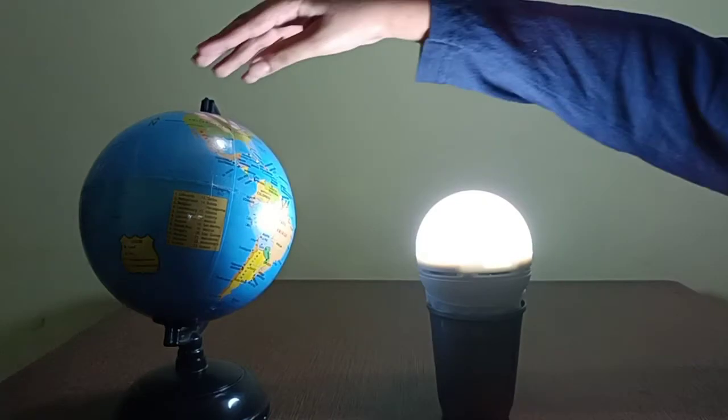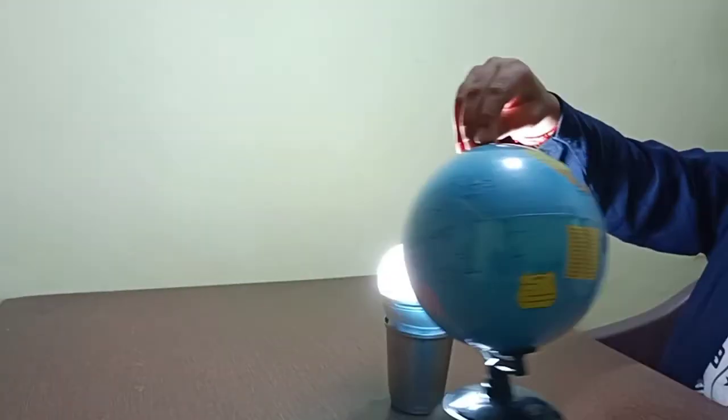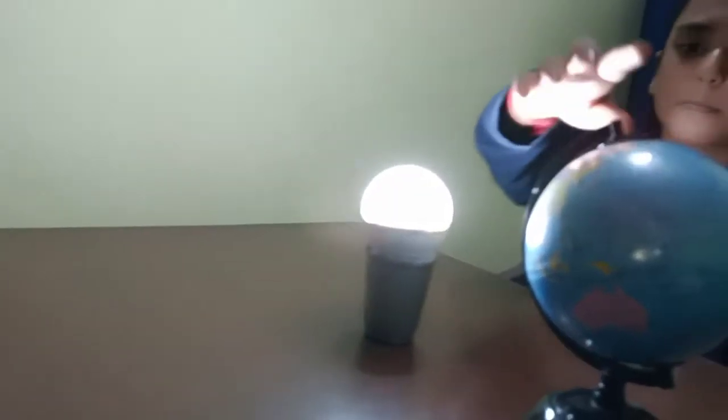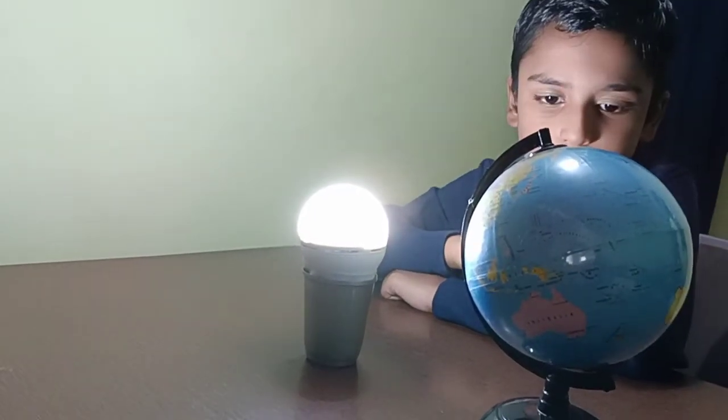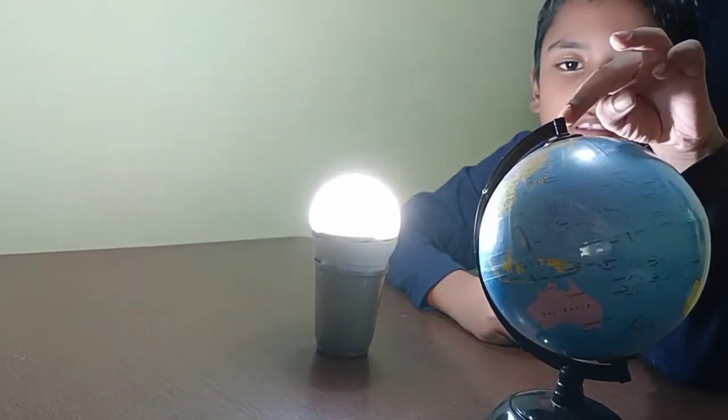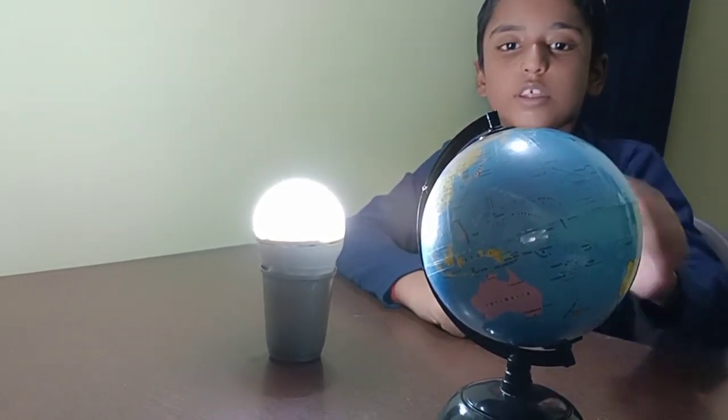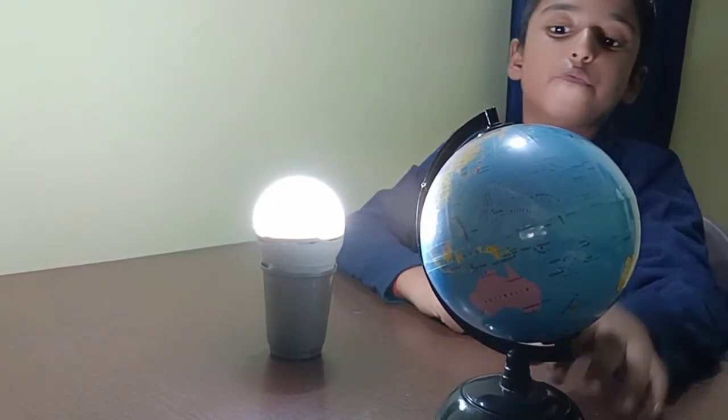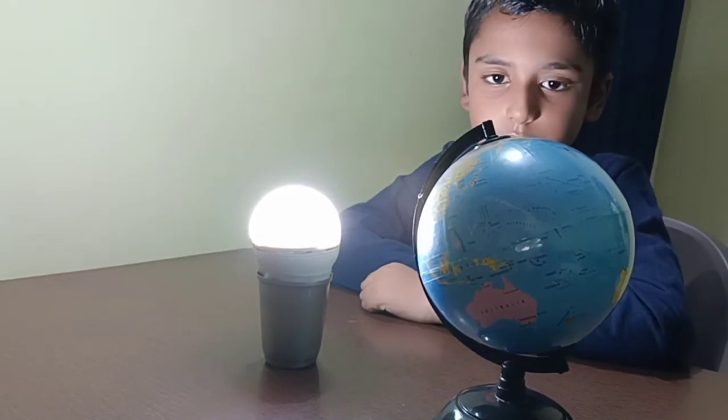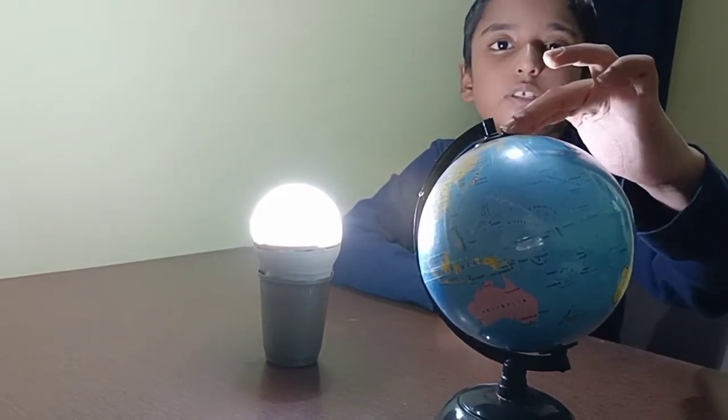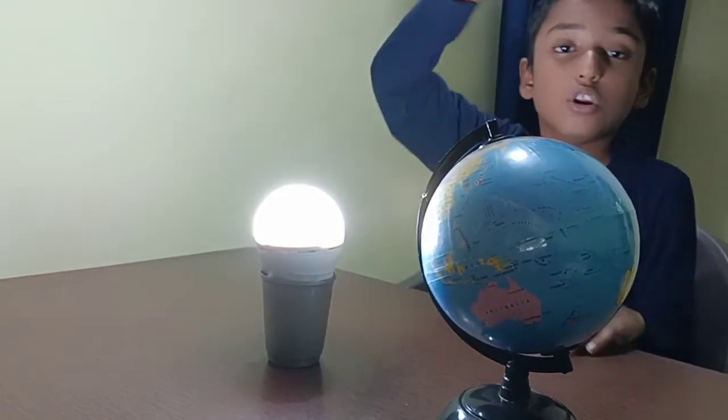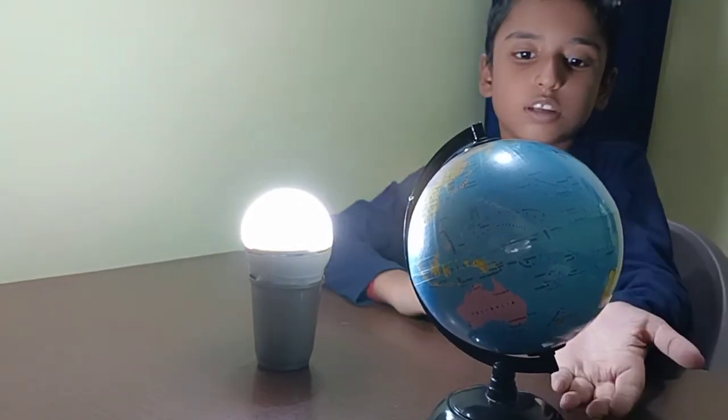When the earth is in this position, it means June. The northern hemisphere has summer season and southern hemisphere has winter season.